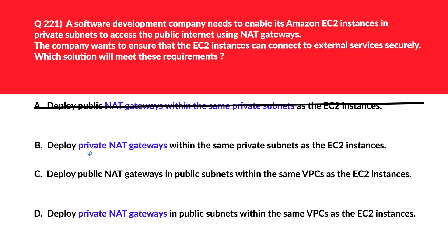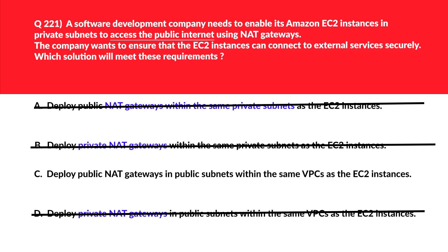Moving to options B and D together — both mention private NAT gateways. There is no such thing as a private NAT gateway, so these are just distractors. That leaves us with option C, which says deploy public NAT gateways in a public subnet within the same VPC as the EC2 instance. NAT gateways must always be in public subnets to provide internet access to instances in private subnets.